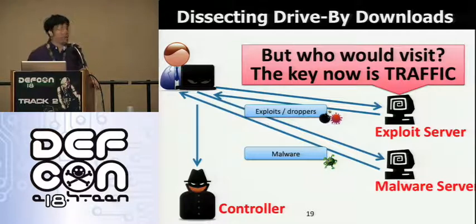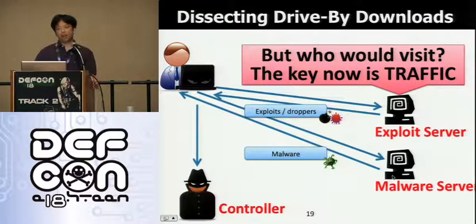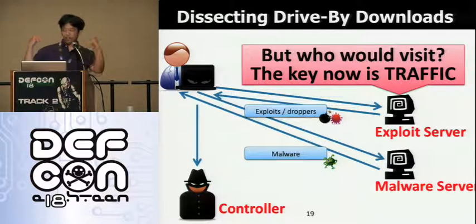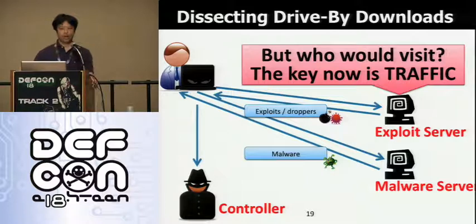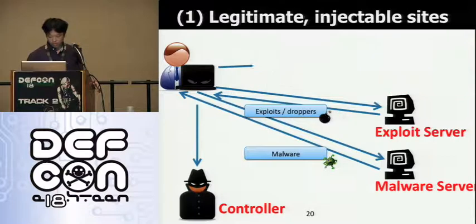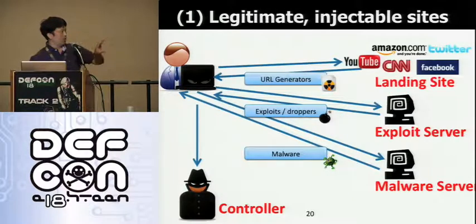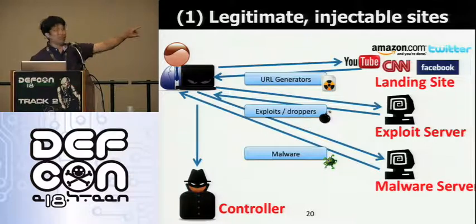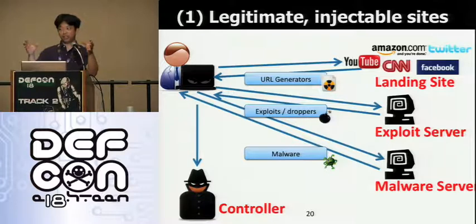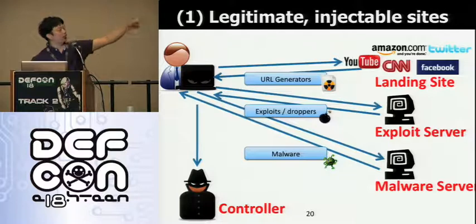Nobody would visit an exploit server directly, so the key is traffic. In Asia, there are at least two ecosystems: groups responsible for developing browser exploits, groups responsible for getting traffic to the exploit servers, and groups responsible for developing the actual malware, which has to bypass antivirus. The attacker typically infects a high-traffic landing website, then delivers a URL generator — a piece of JavaScript that generates iframes or JavaScript sources. This iframe causes the browser to start loading content from the exploit server.